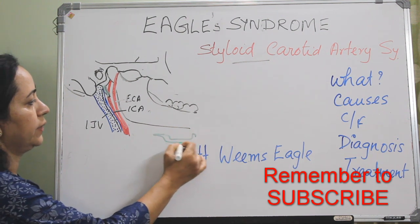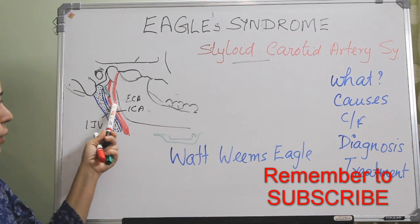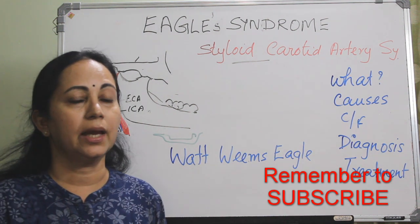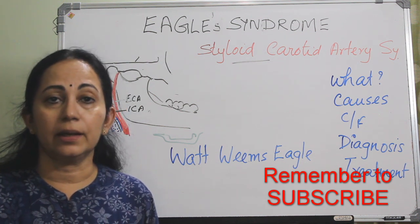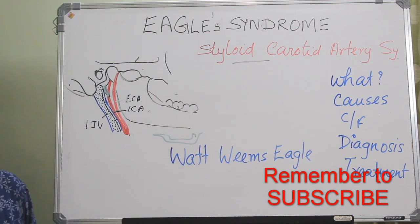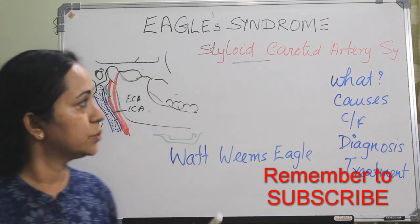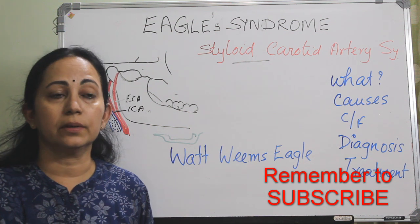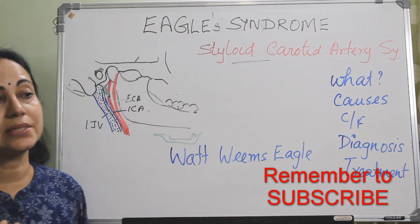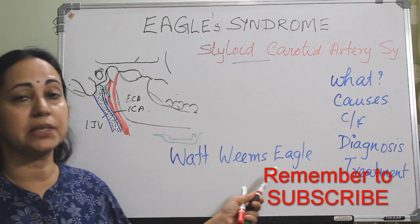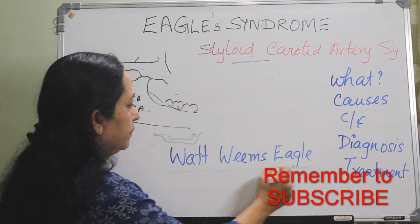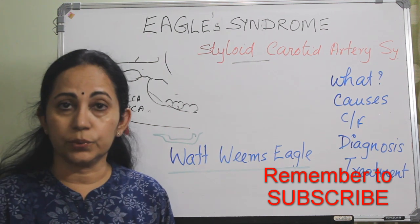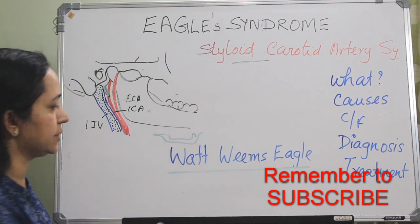The hyoid bone comes somewhere here. So either an elongated styloid process or calcification of the stylohyoid ligament characterizes Eagle Syndrome, with pain especially on the throat and neck, referred to the ipsilateral ear. We have known about Eagle Syndrome since the 17th century, but it was first formally described by Watt Weems Eagle, an American otolaryngologist at Duke's University, in 1937.